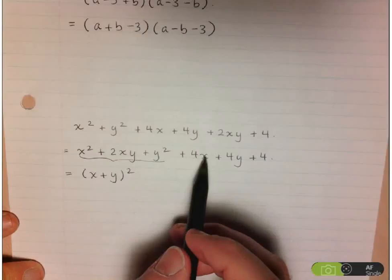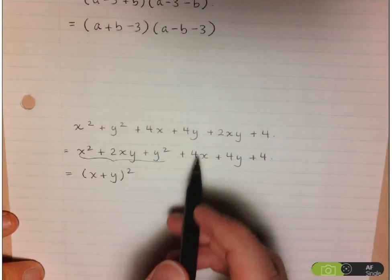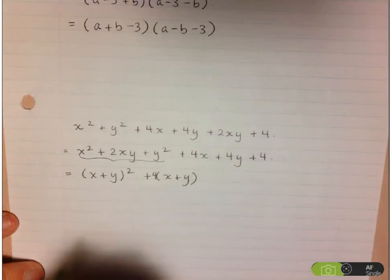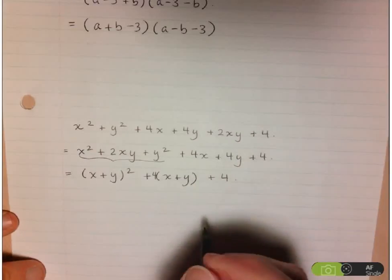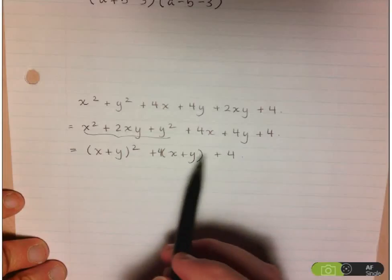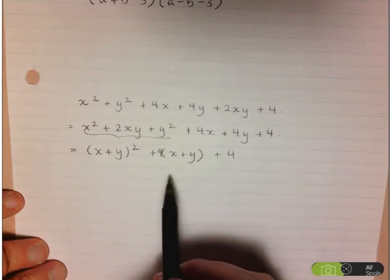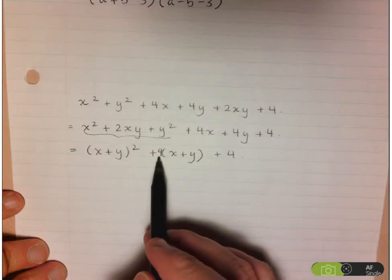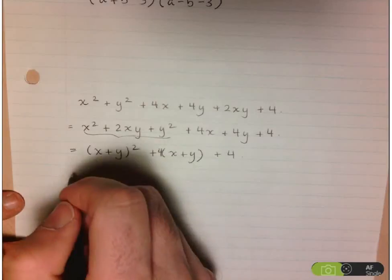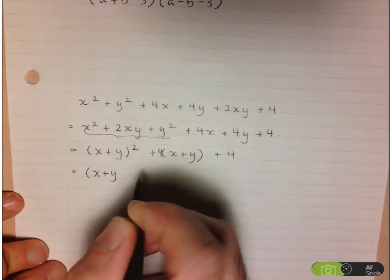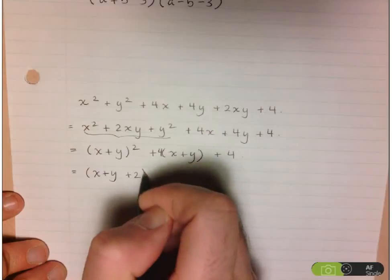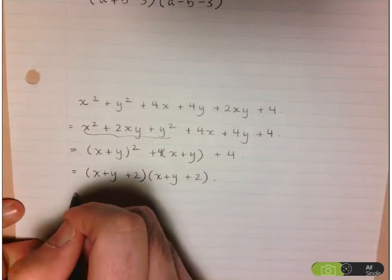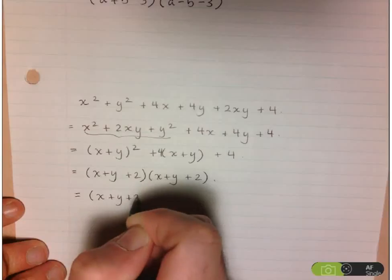Looking at just the first three terms, I now notice that if I look at the remaining two terms and factor out a 4, I just end up with an x plus y, and then plus 4. So what I've just created is a trinomial: something squared plus 4 times that something, plus 4. I'll treat this as a regular trinomial — look for two numbers that multiply to 4 and add up to 4, which is just 2 and 2. So I'd have x plus y plus 2, times x plus y plus 2. And in fact this is itself a perfect square: x plus y plus 2, all squared.